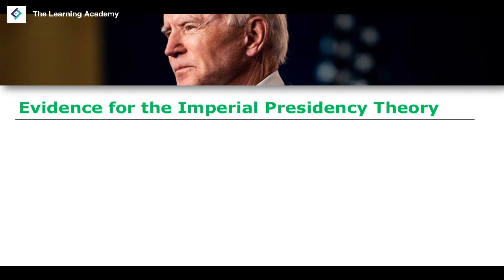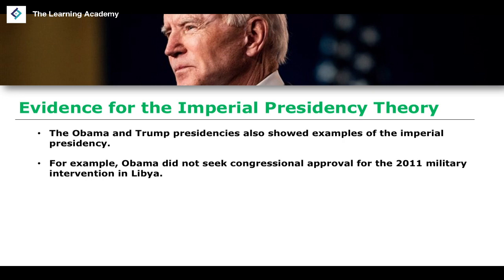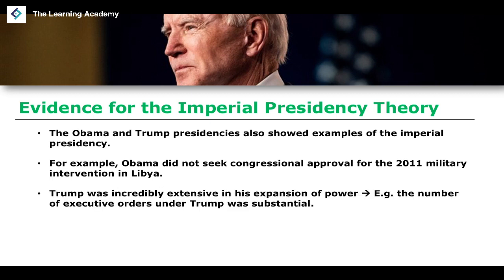Obama and Trump also showed examples of an imperial presidency, with Obama less so and Trump more so. One example was Obama not seeking congressional approval for a 2011 military intervention in Libya. As for Donald Trump, there are multiple examples of the extension of presidential power — notably, the number of executive orders under his single term was substantial, with a huge increase compared to previous administrations.